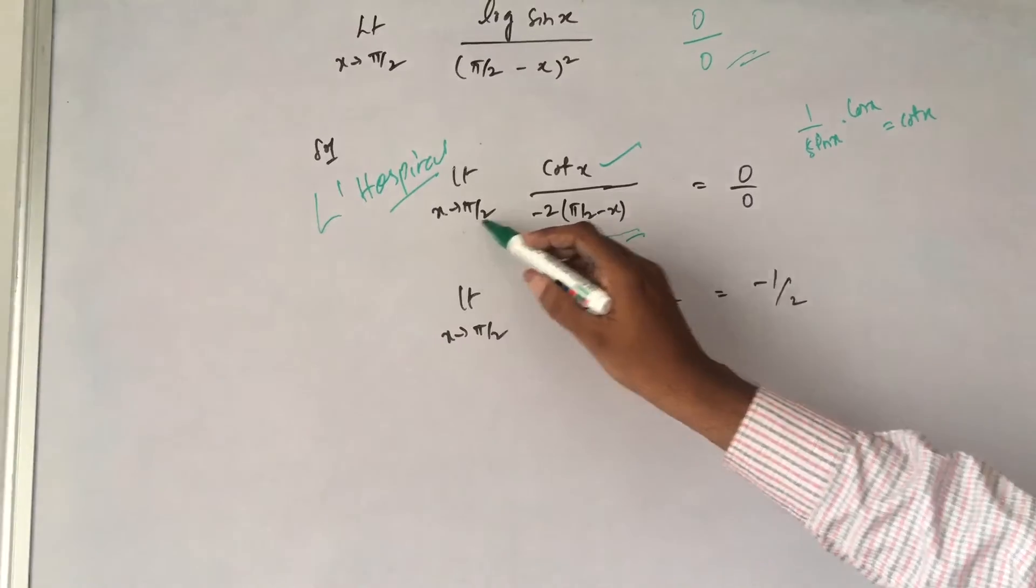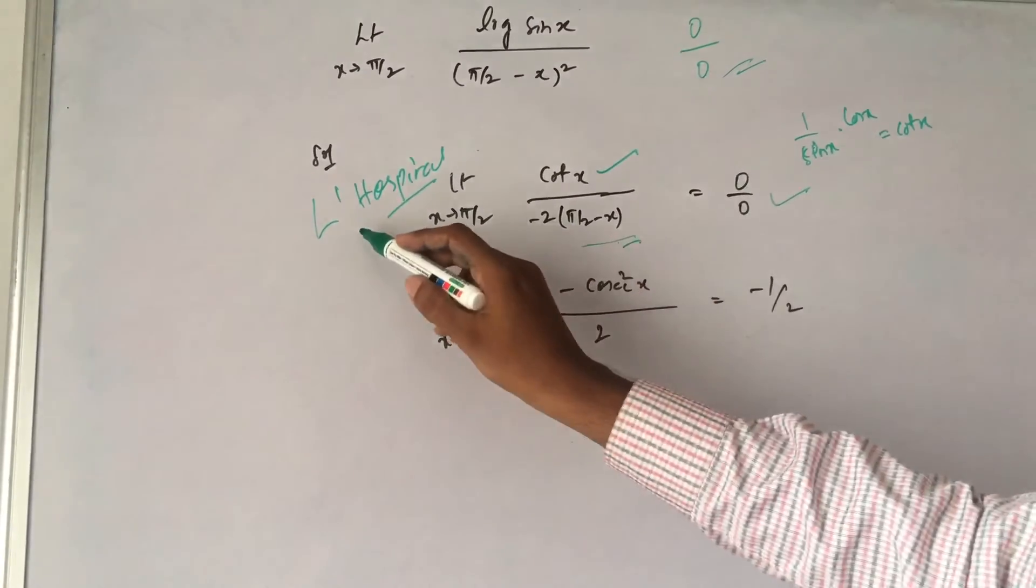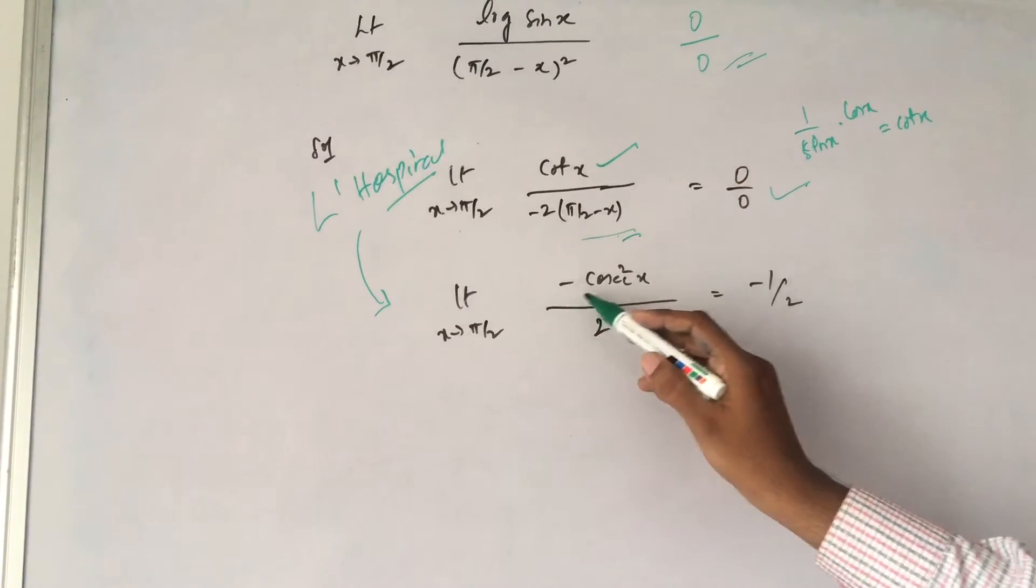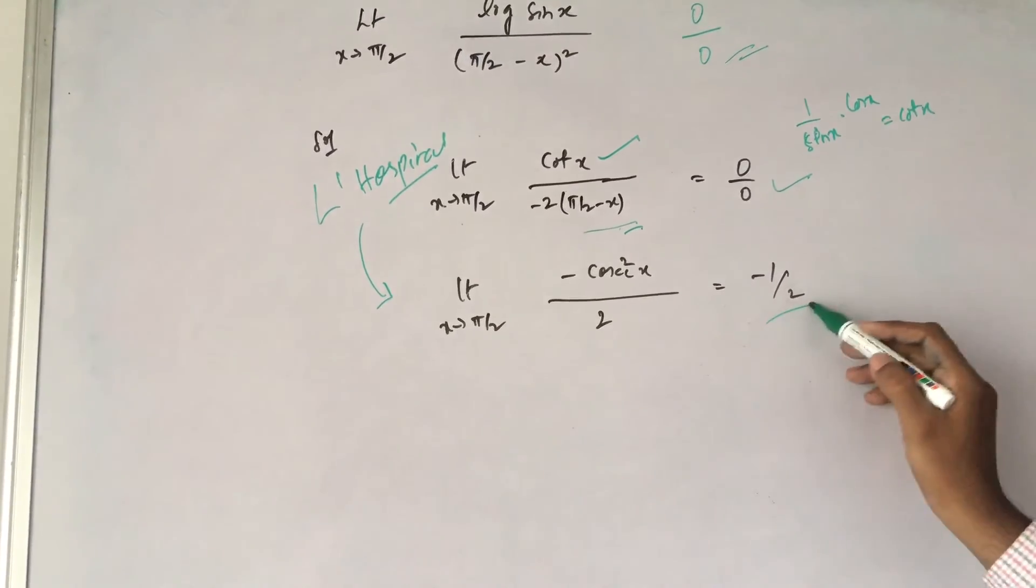Again if I substitute π/2, I get 0/0. Again indeterminate. So if I put L'Hôpital's rule again, differentiation of cot x becomes -cosec²x. So if I put x as π/2, I get this result.